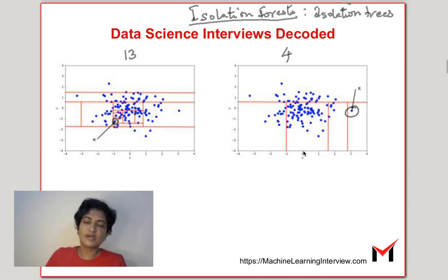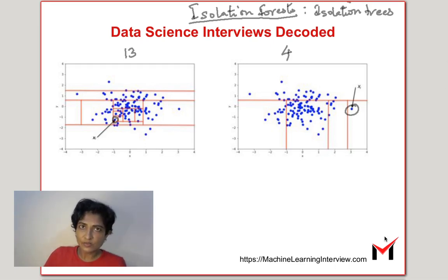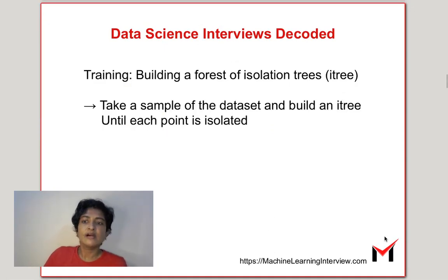And again, these partitions were made at random. In other words, the number of partitions tells us whether a particular point is an anomalous point or a regular point. Now, let's look at the isolation forest algorithm with this in mind.